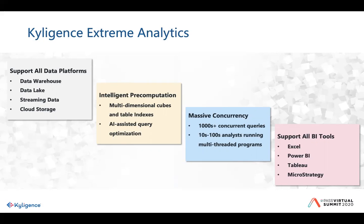We also offer massive concurrency — that means you could have thousands of analysts at your company and different organizations querying at once. They don't have to be humans; they could also be computers. You could have a multi-threaded program, and we see this a lot in machine learning, running thousands of queries at once — feeding into a machine learning program. We see that a lot also in the financial industry.